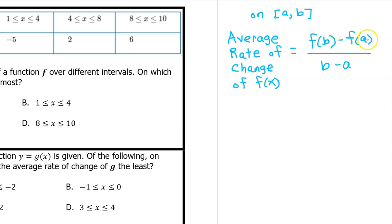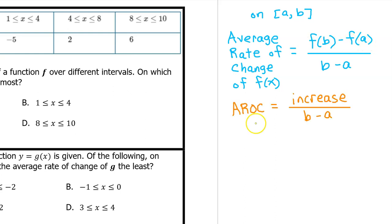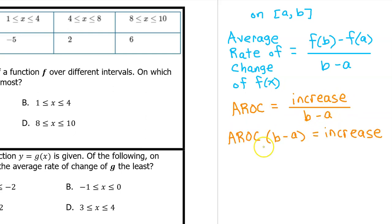This is the difference in the y values — the increase or decrease if it's dropping. So the average rate of change equals the increase divided by b minus a. We can get the increase by itself if we multiply both sides by b minus a, so the average rate of change times b minus a gives you the increase.